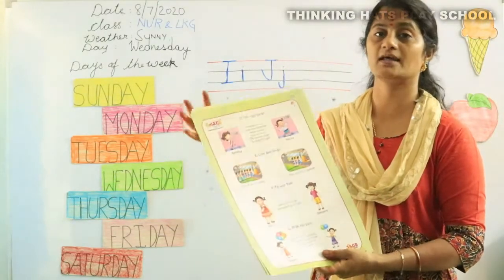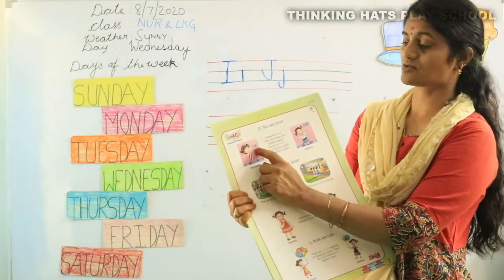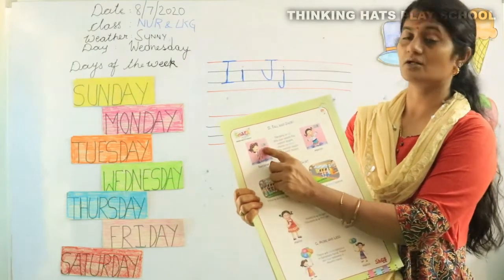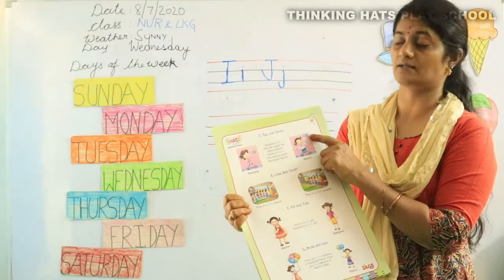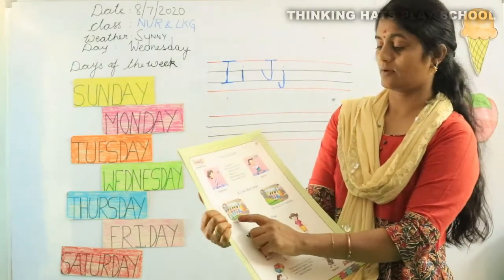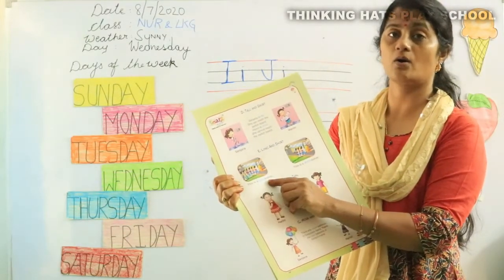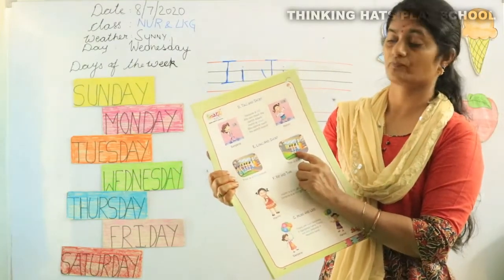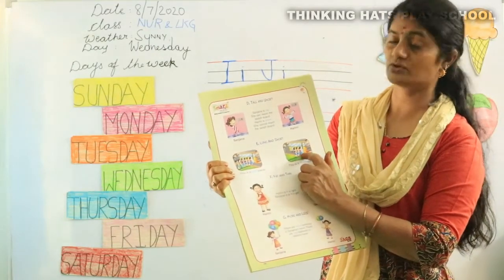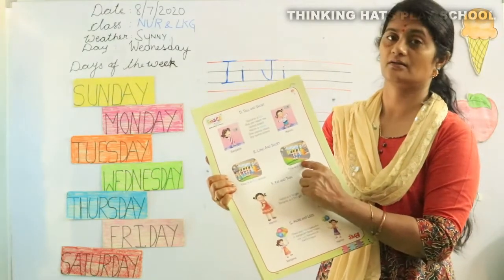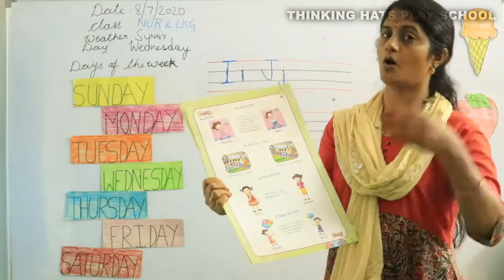Now let's take a look at opposites. Tall and short — this little girl Sanjana is trying to reach the switchboard, Sanjana is tall. This little girl Harini is not able to reach the switchboard, so Harini is short. Tall, short. When you stand in a queue, sometimes the queue becomes very long — long queue, short queue. Some of you have short hair and some girls have long hair — long hair, short hair.